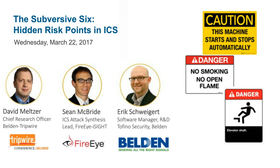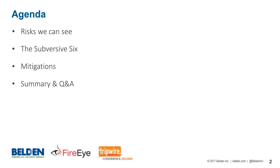Thanks, Kate, and good afternoon, everyone. This is Dave Meltzer, Chief Technology Officer at Tripwire. Today we're going to talk about risks in industrial control environments. I'll start with some background on where we're seeing attacks and threats in these ICS environments today. Then we're going to hear from Sean on what he calls the Subversive Six, and then from Eric, who will talk about things we can do to address these challenges.